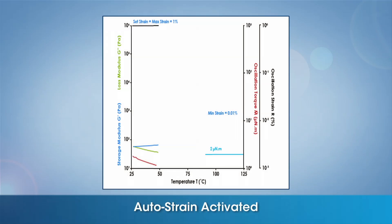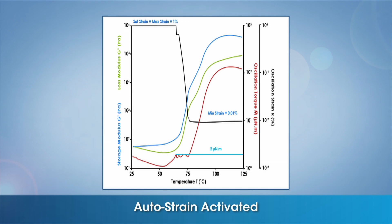This is to ensure that Auto Strain will take control at that point in order to reduce the strain while the material begins to cure, preventing shear damage to the developing sample network. The strain will continue to reduce at the rate specified from the strain adjust percentage to the set minimum value of 0.01%, in attempt to maintain the maximum set torque as shown.